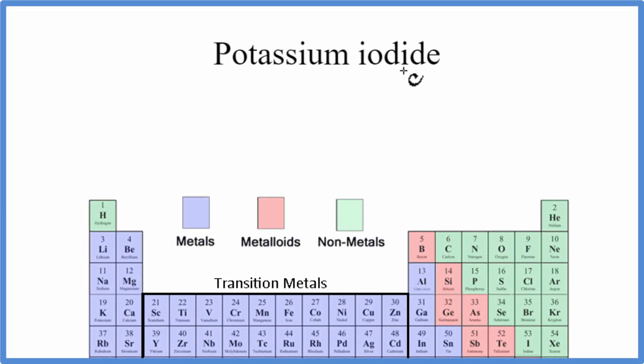To write the formula for potassium iodide, we go to the periodic table and we see potassium, that's K, that's a metal, and iodine, that's I, that's a nonmetal.